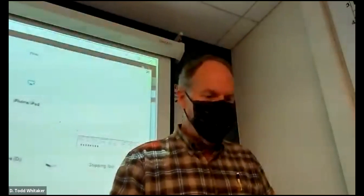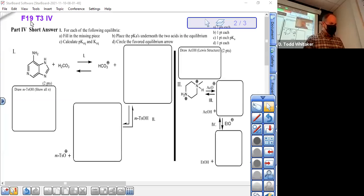The request to do a PKA problem from Fall 19, Test 3, Part 4. The PKA problem has as follows. We have to fill in the missing pieces, calculate PKEQ and KEQ for each of the parts one, two, three, and four. So four PKEQs here, and we're going to put PKAs, circle the favored arrows, and be done with it.